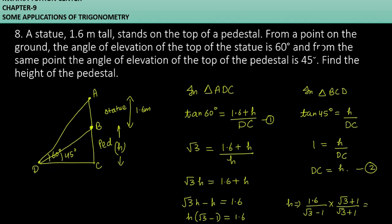So you will get 1.6 times root 3 plus 1 in the numerator, and in the denominator 3 minus 1. This will give you root 3 plus 1 divided by 2. So you will get 0.8 times root 3 plus 1 meter.